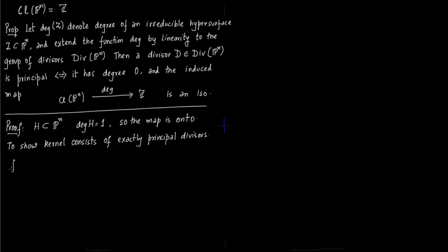Now we want to show that the kernel of this map consists of exactly principal divisors. Say F is an element of K(P^n) star. We have to show that this F lies in the kernel. Here it is a principal divisor.